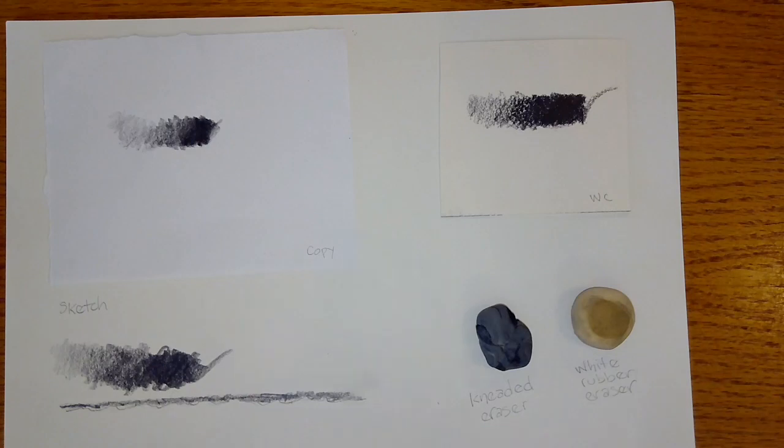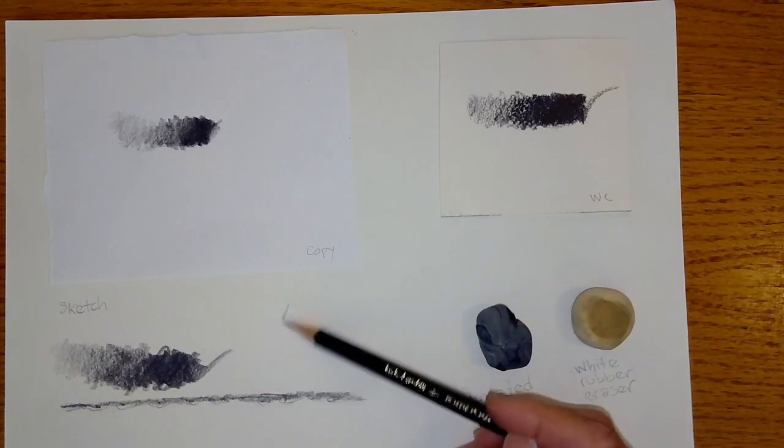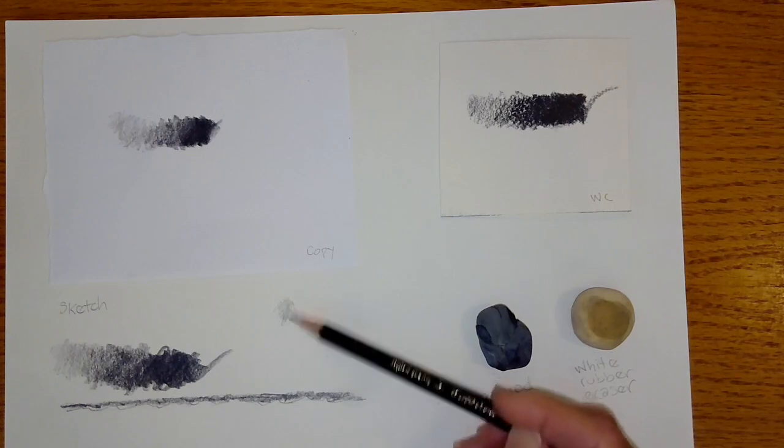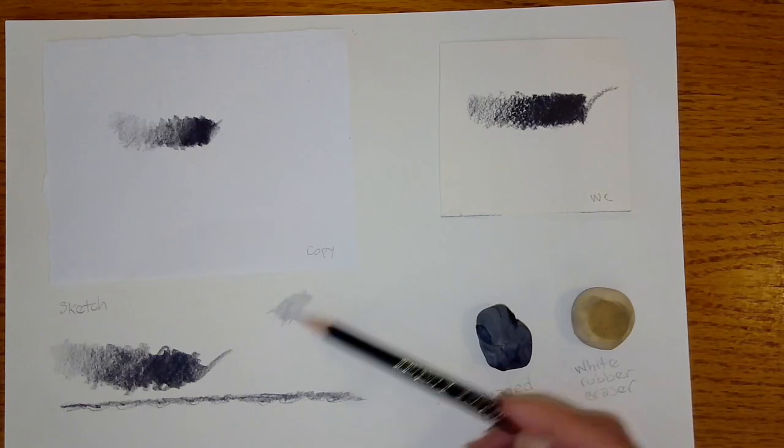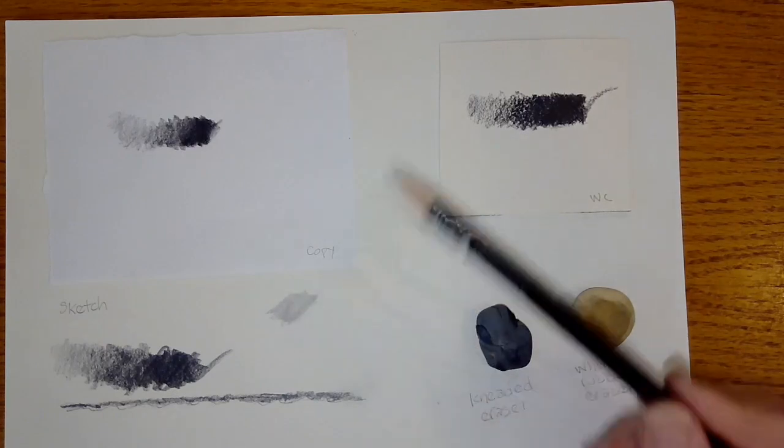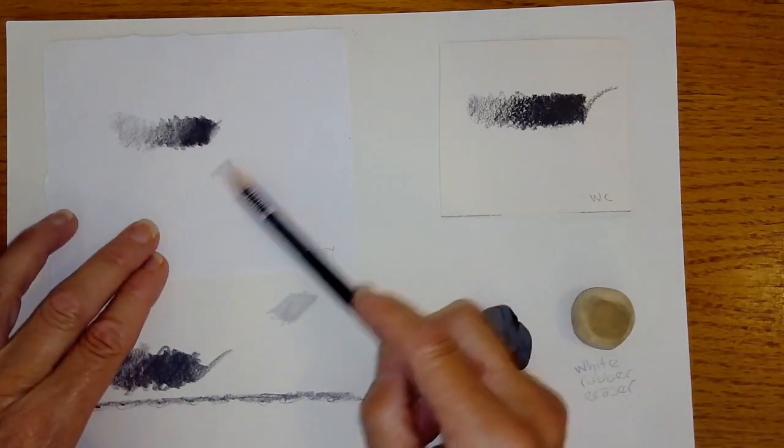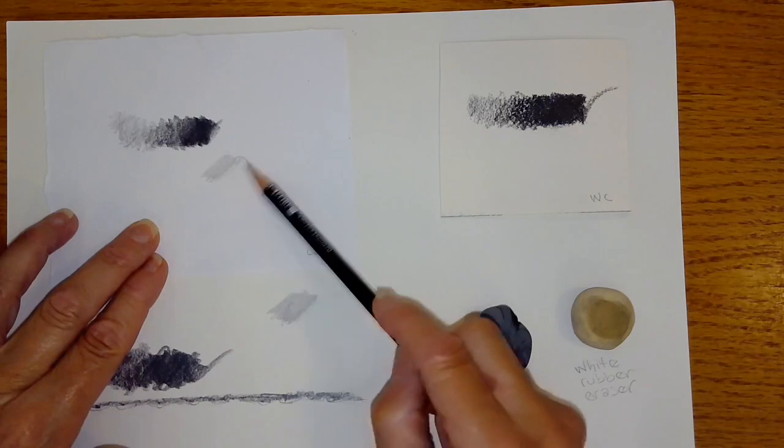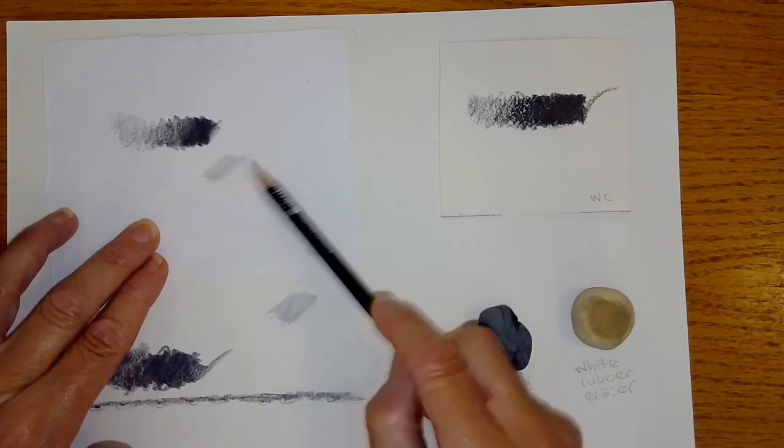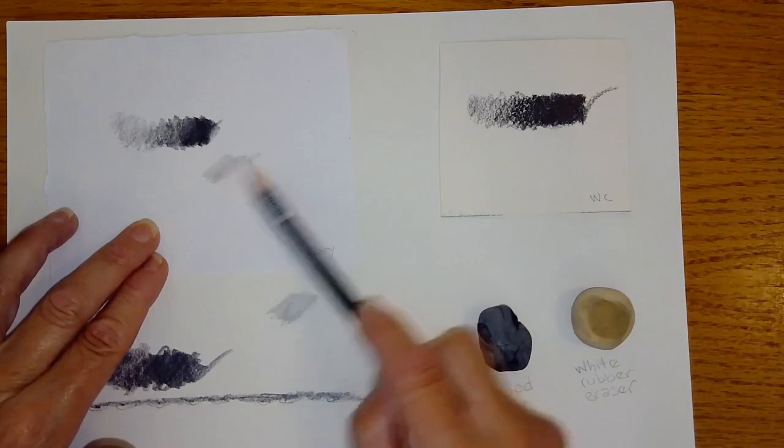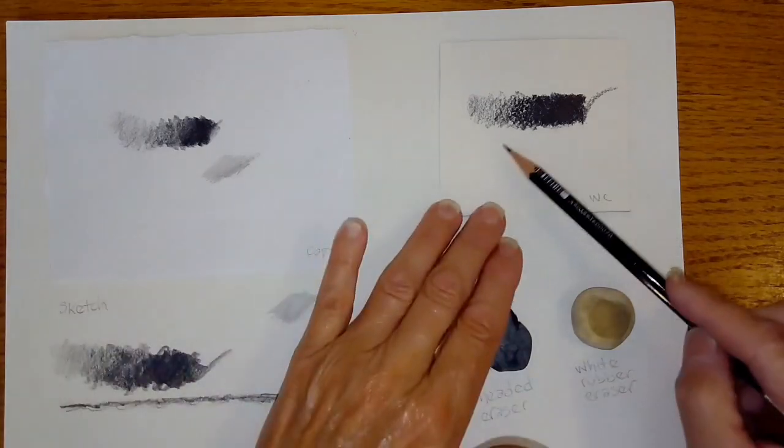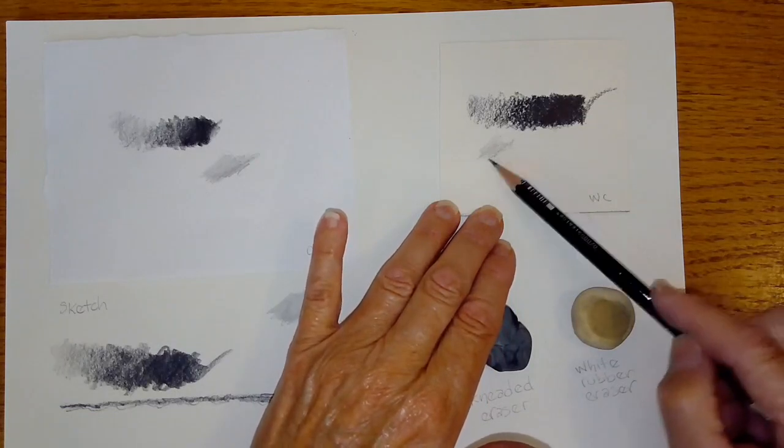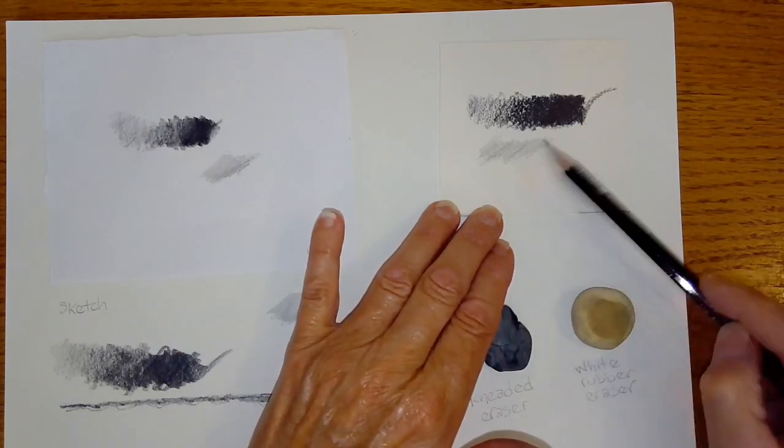I'm going to quickly show you what a 2H might look like on each of these real quick. This has a harder lead, so it actually takes a lot more effort to apply in a nice smooth way. Oftentimes, even when you're using the side of the pencil, you can still get a linear feeling to it rather than a smooth continuation. That works really nice on the watercolor paper.